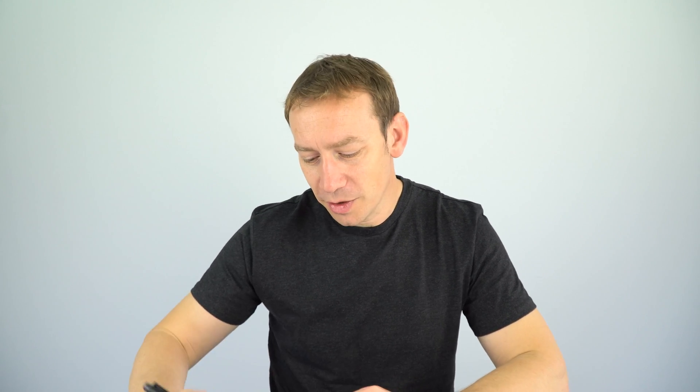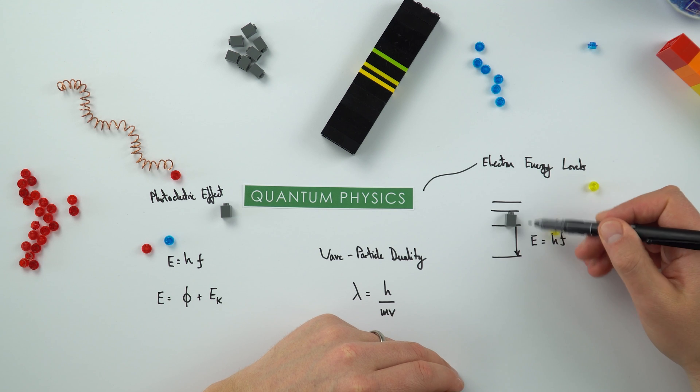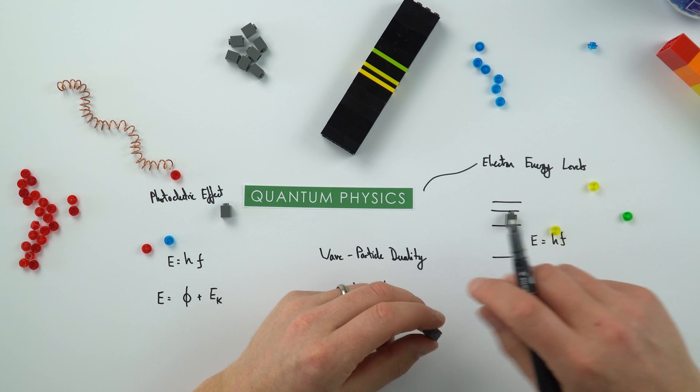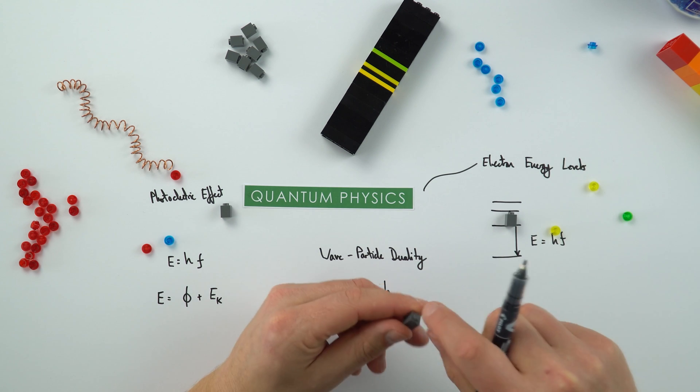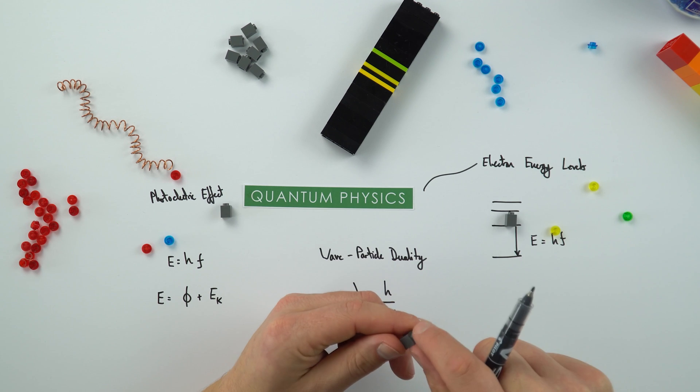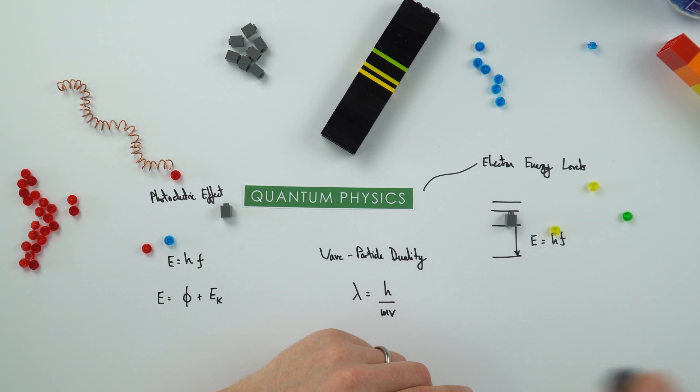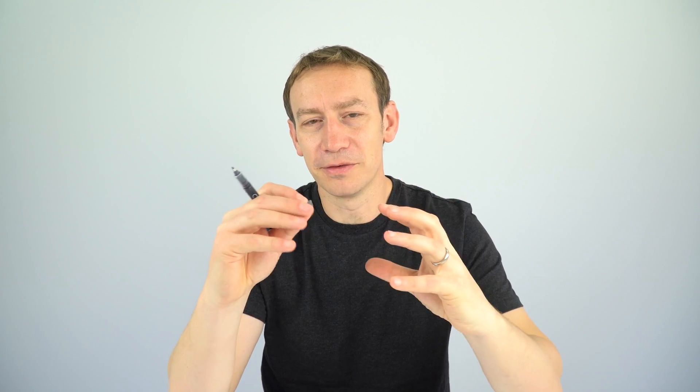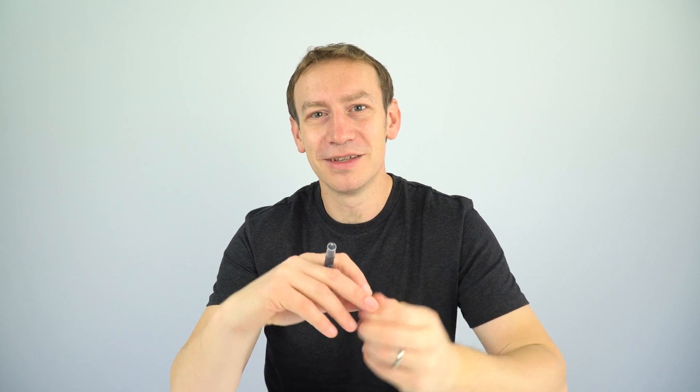This also explains in a way why we only have certain distinct energy levels where electrons can exist, and that's because inside the atom we have a standing wave set up of these electrons as they're orbiting the nucleus. And these can only exist in certain or I guess predetermined levels. But again, it gets a little bit complicated, but you will cover this as you go through A-level physics.